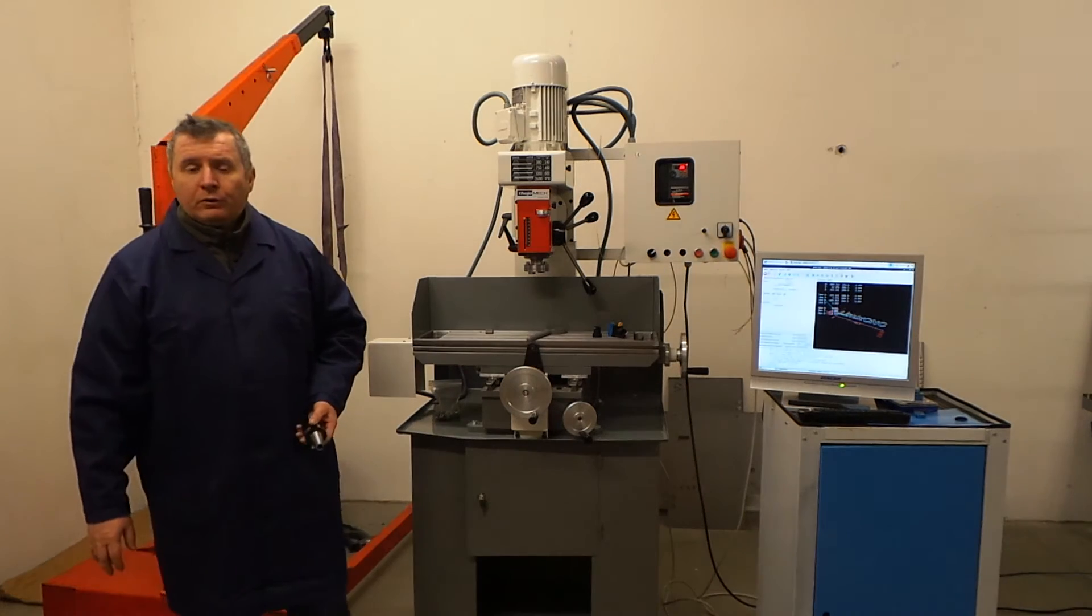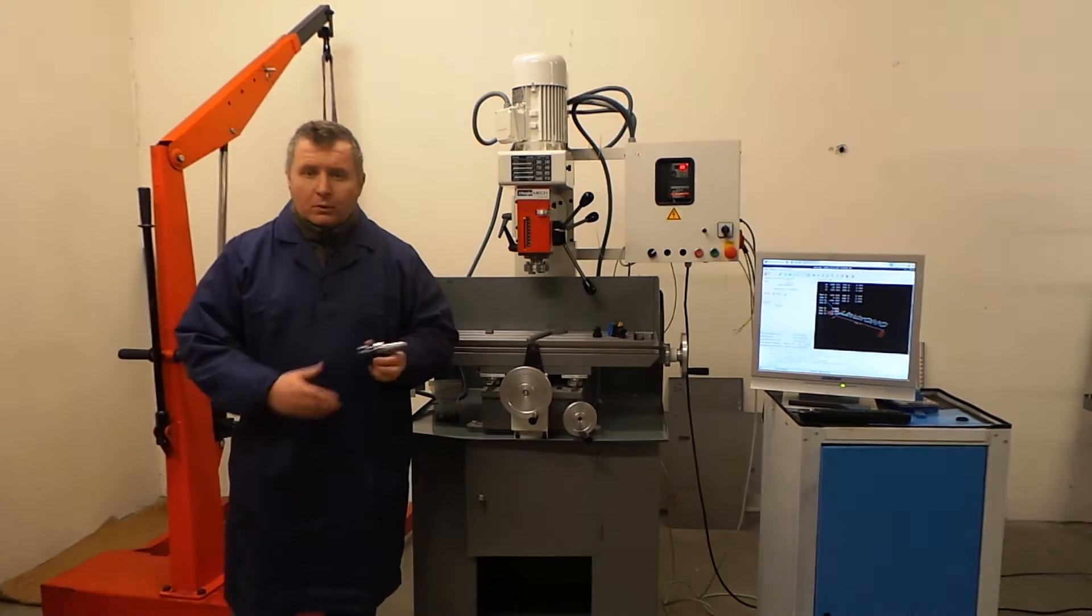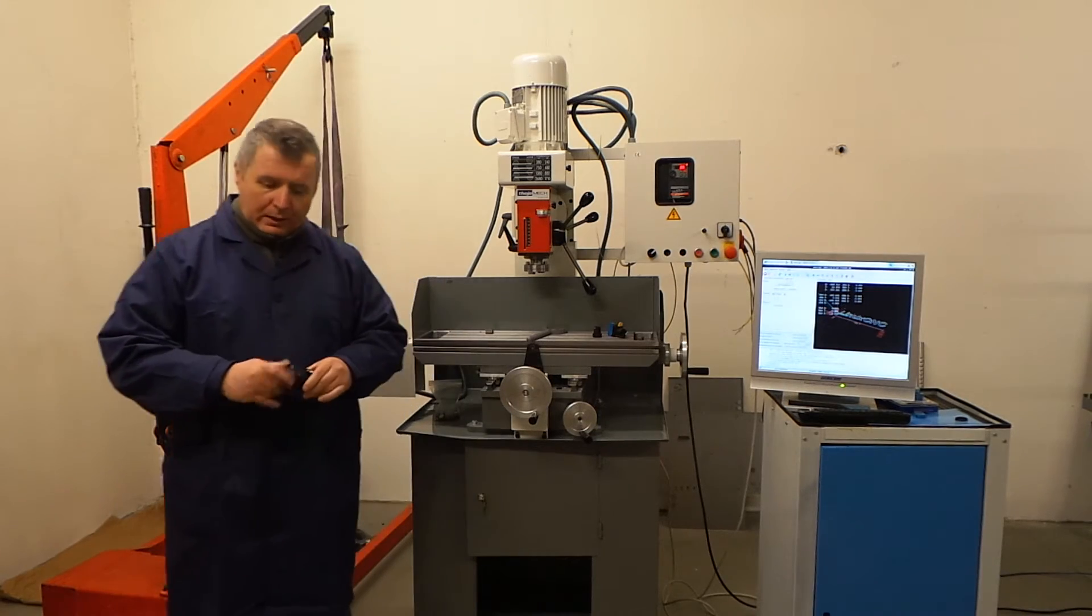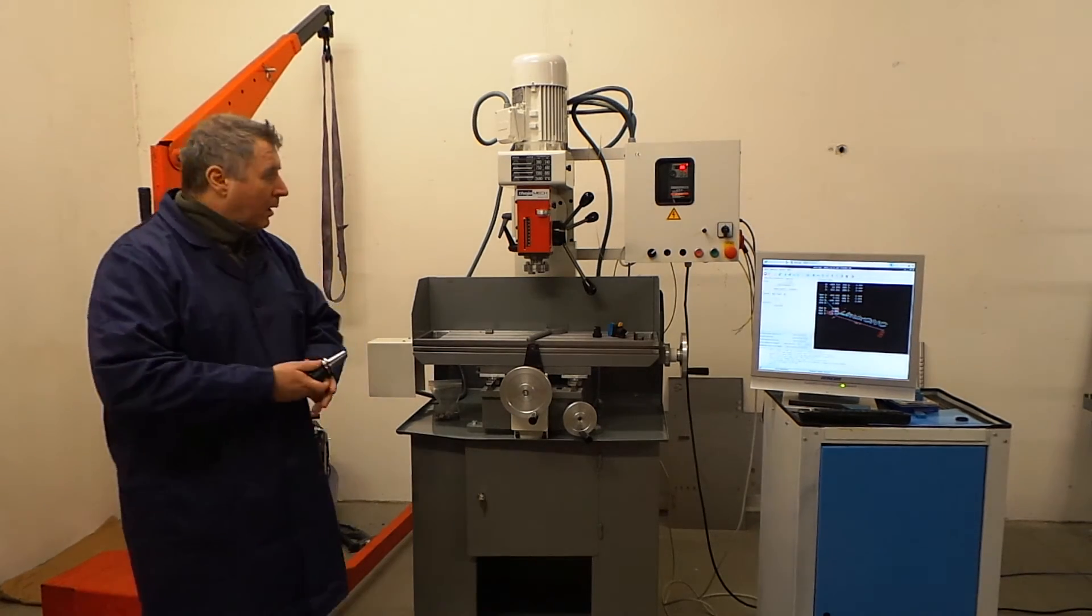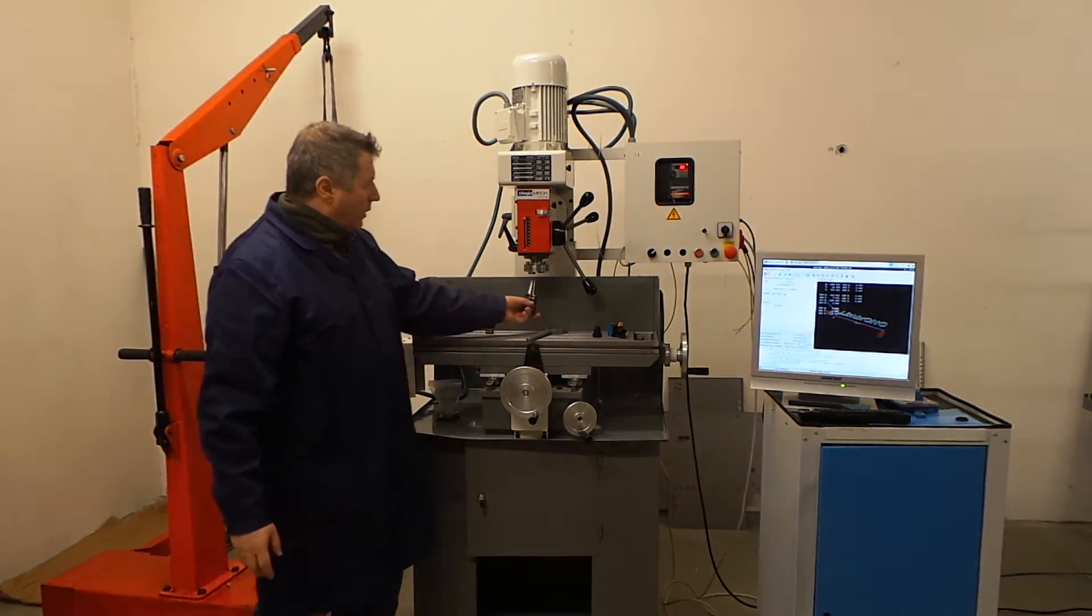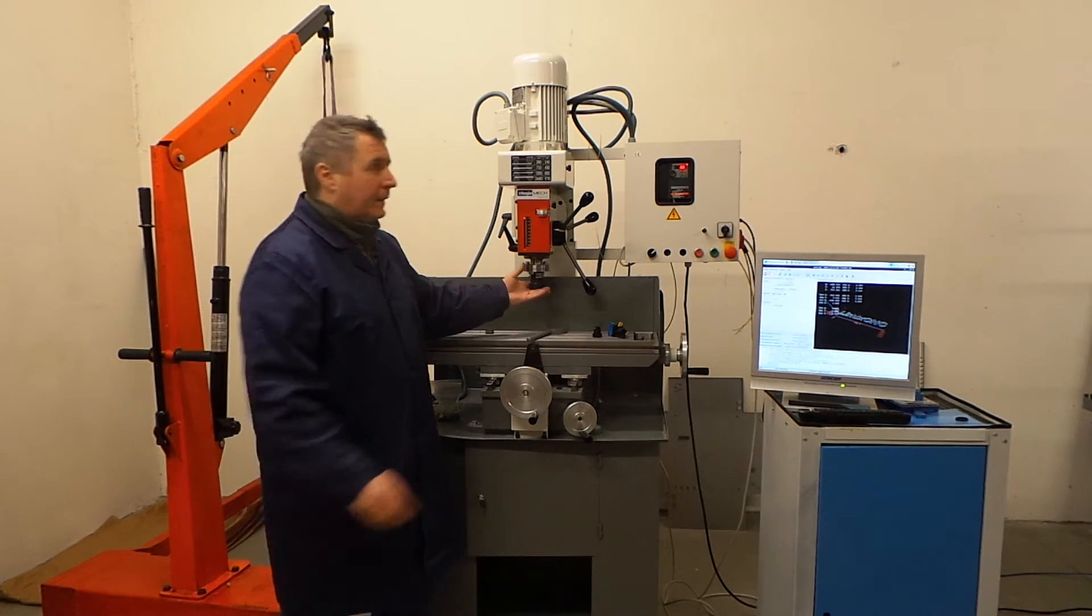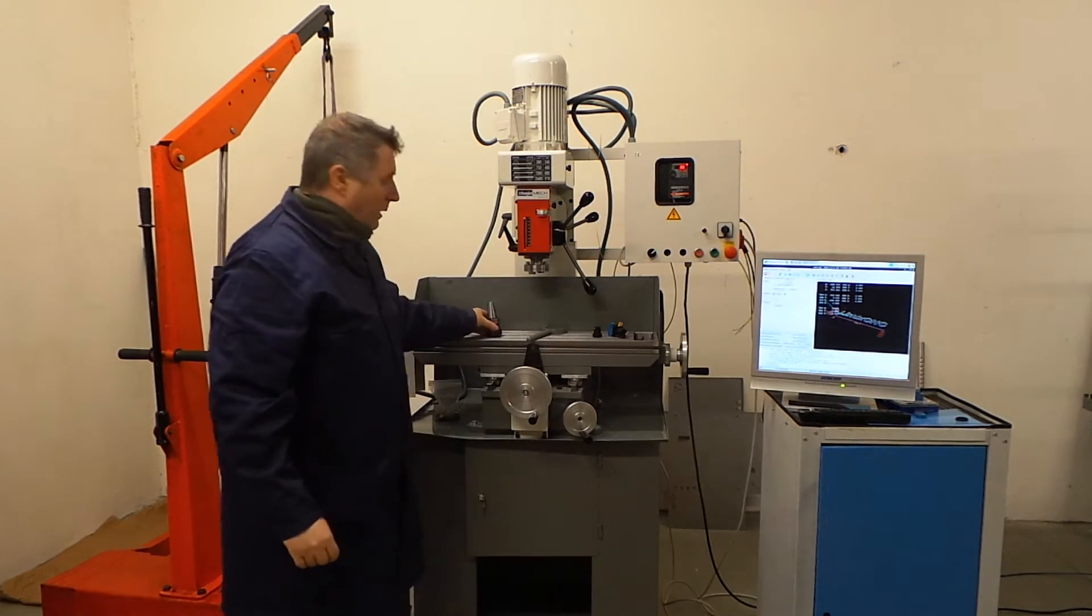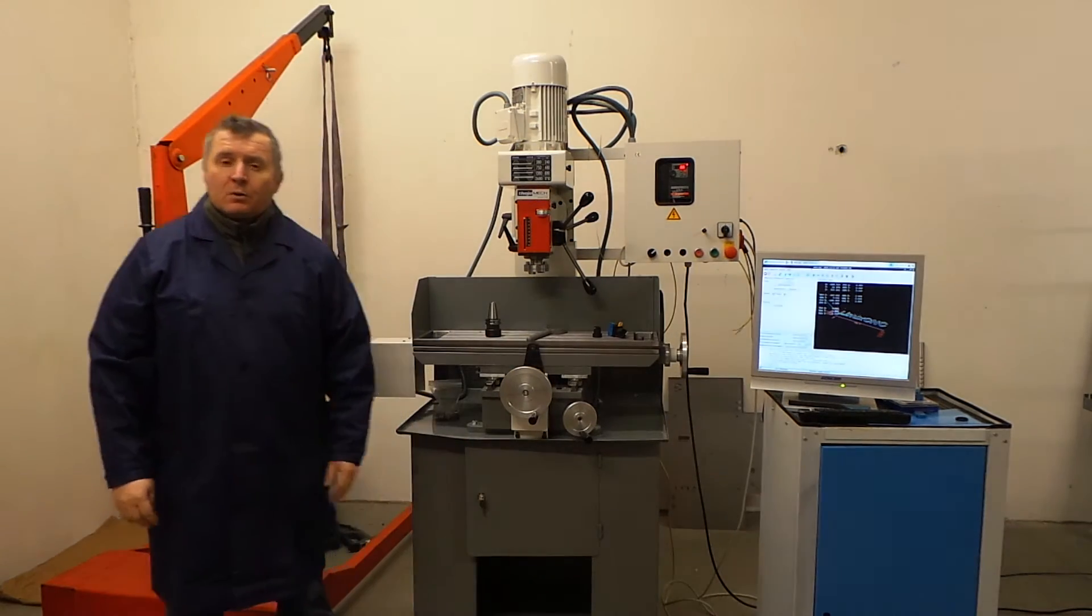The tool link. We use ISO 30 tool link. Here the example is an ER32 collet holder. How does it work? You just put in the collet like that. Then you have a bar. Turn it and you're fine. This goes in seconds.